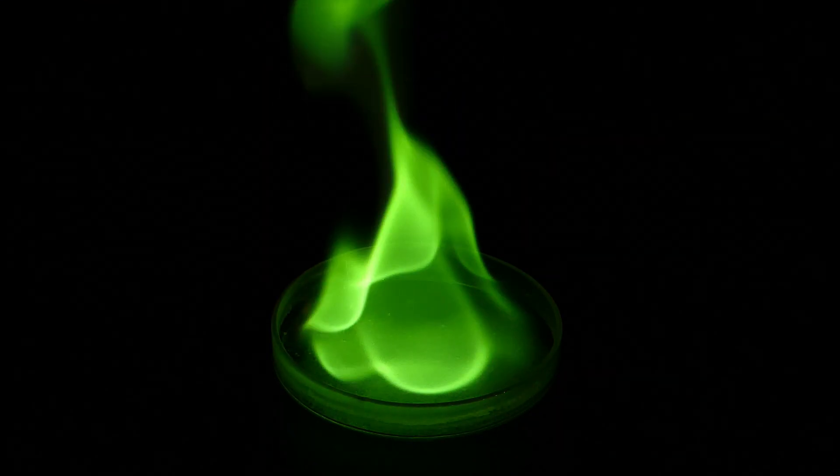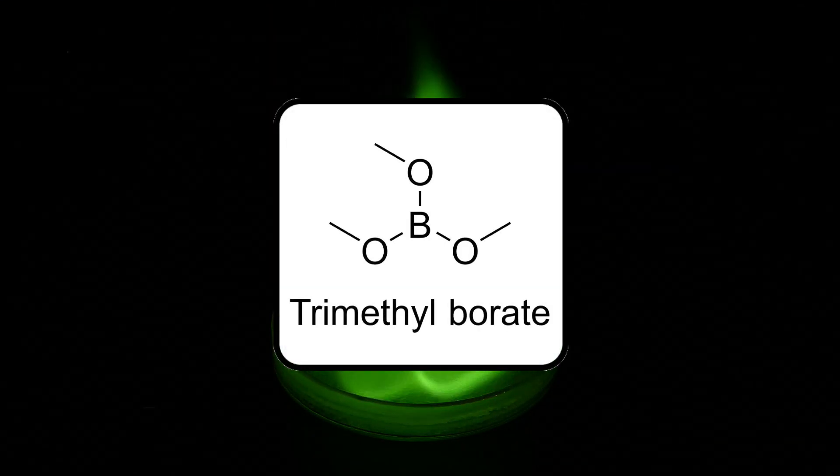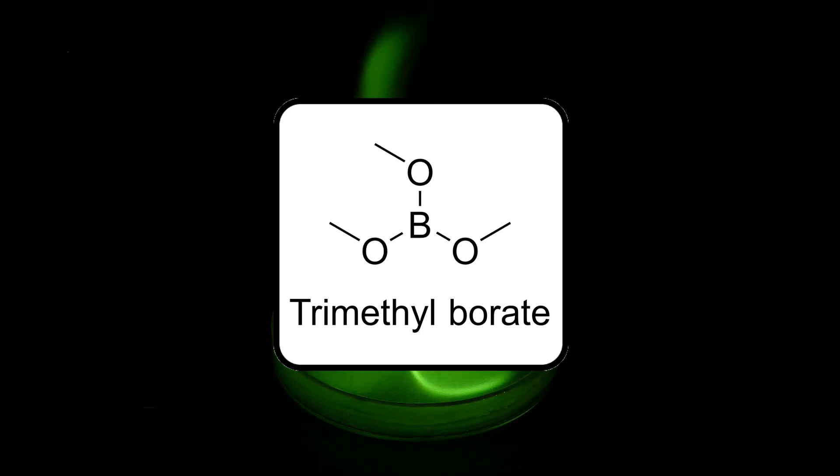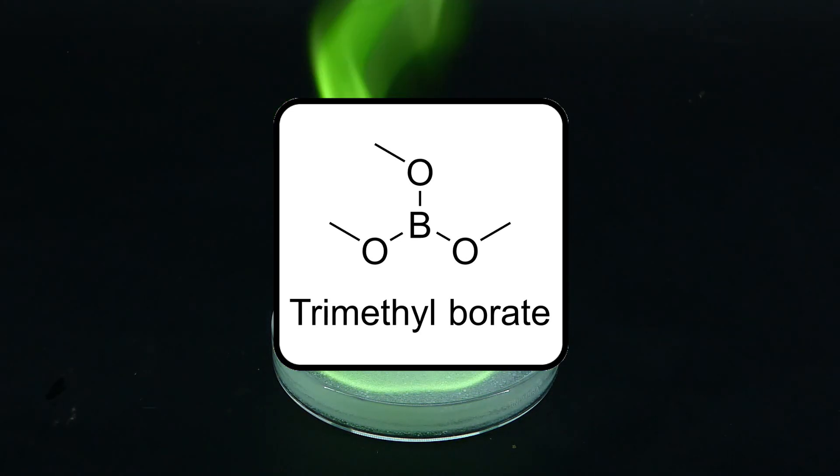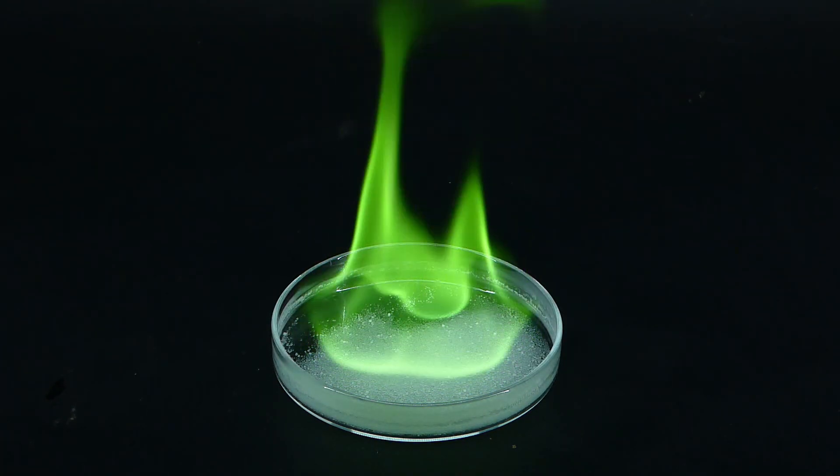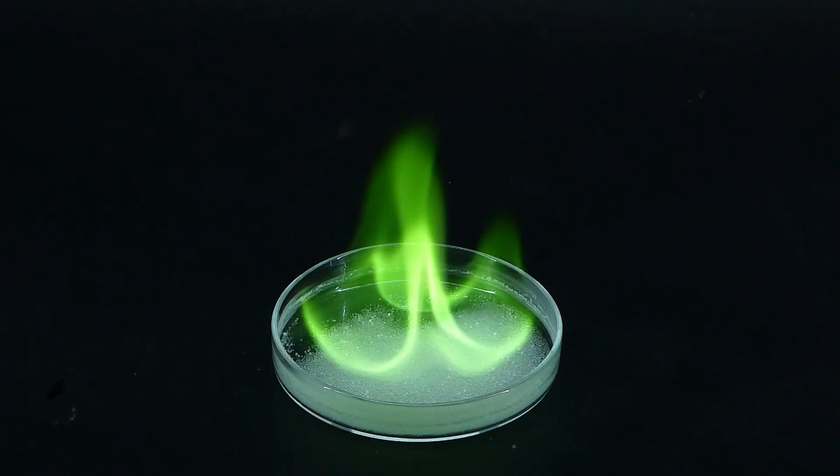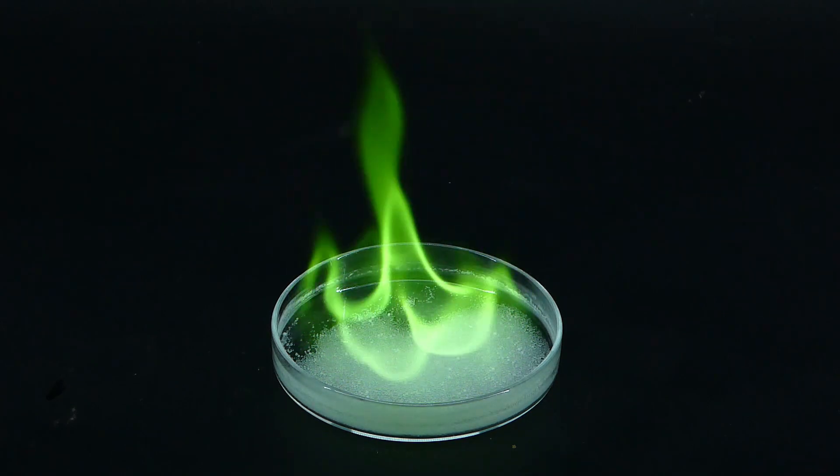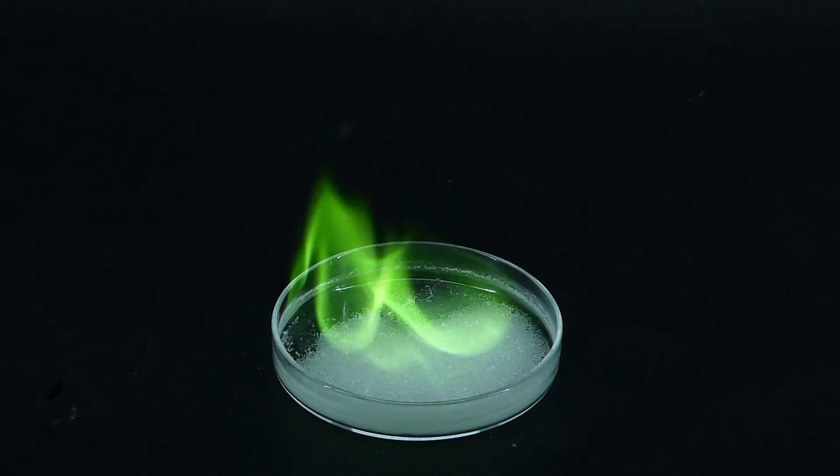The chemical that this reaction produces is called trimethyl borate, and it is a clear liquid capable of burning by itself. Its molecule has a boron atom in the center, which makes it perfect for making green fires. That is also the compound that I will be synthesizing today, and now let's move on to collecting the needed ingredients.